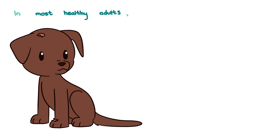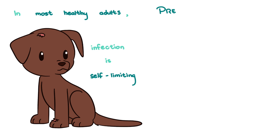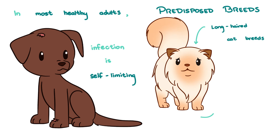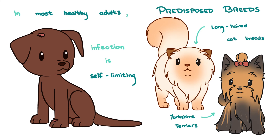In most healthy adult animals, the infection is self-limiting, often only localizing on the head and paws. But in young, debilitated animals, some long-haired cat breeds, and Yorkies, infection can spread all throughout the body.